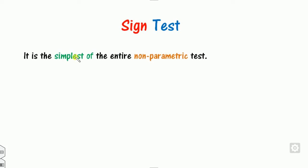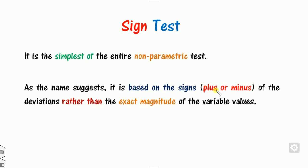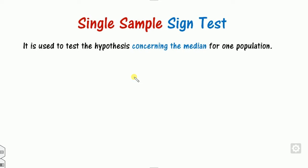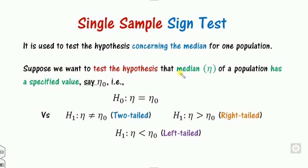The sign test is one of the simplest non-parametric tests. As the name suggests, 'sign' means plus or minus. It is based on the sign of the deviations rather than the exact magnitude. For example, if my numbers are 41, 39, and so on, it depends only on their signs — plus or minus — not on the values themselves. This test is basically used for making inferences concerning the median for one population, and we use eta (η) as the symbol for median throughout the lecture.